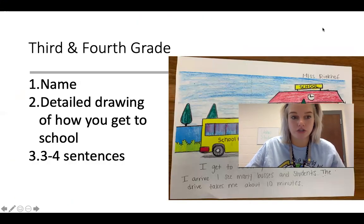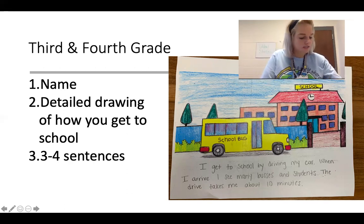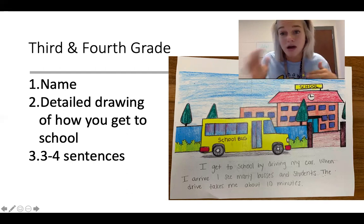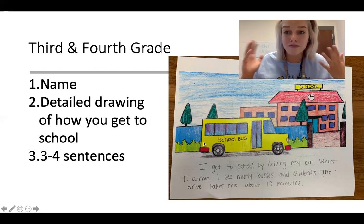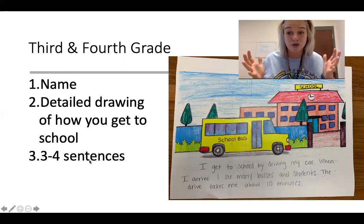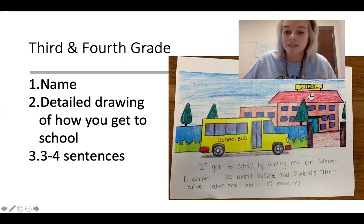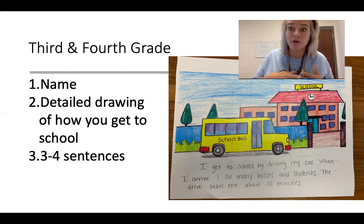Now for my third and fourth grade students, I want your name and a detailed drawing of how you guys get to school. I mean detailed — if you look at these, they are so detailed and there's so many colors. Just try to do as much detail as you can. I'm not an artist, I'm not expecting you guys to be perfect, I just want some colors. Then I want you to have three to four sentences, and I want these to be descriptive sentences — I want you to say what you see on your way. An example would be: 'I get to school by driving my car. When I arrive, I see many buses and students. The drive takes me about 10 minutes.' And I had punctuations. Maybe you see a building, a hill, or a certain tree — I want you to add things that you might see.